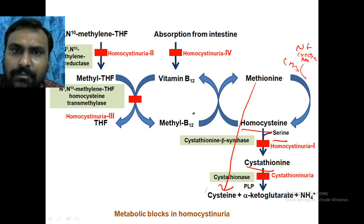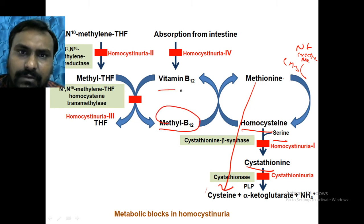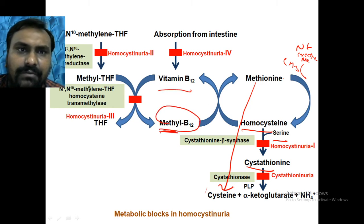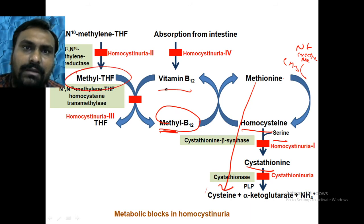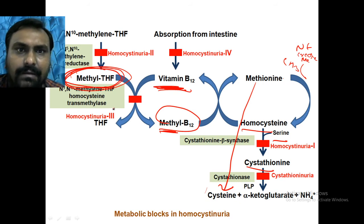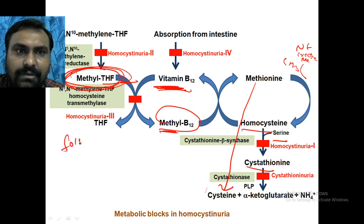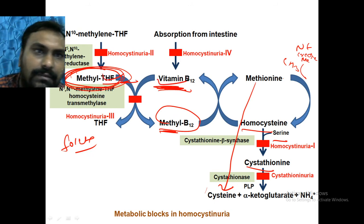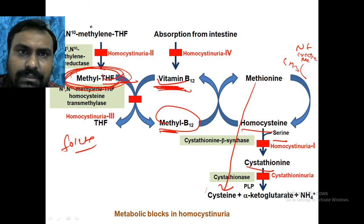Methionine can be resynthesized from homocysteine with the help of methyl-B12, which is converted to B12, and this B12 is again converted to methyl-B12 with the help of methyl-tetrahydrofolate. If there is a vitamin B12 deficiency, methyl-tetrahydrofolate will be trapped — this is called the folate trap. So vitamin B12 and folic acid must always be given together.